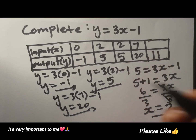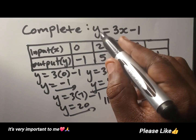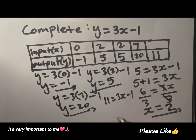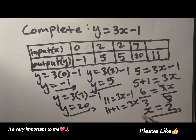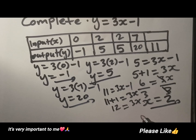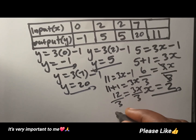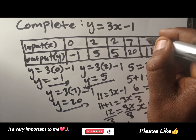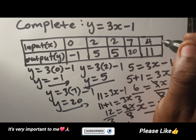Now we are given 11. Let's say 11 is our y, equal to 3x minus 1. So what is going to happen? We take that 1 to this side, so we are going to have 11 plus 1 equal to 3x. We add these two numbers, which gives us 12 equal to 3x. And then we are forced to divide by 3 again to get x alone. And then x is equal to 4. Our input here is going to be 4, so we are done completing the table.